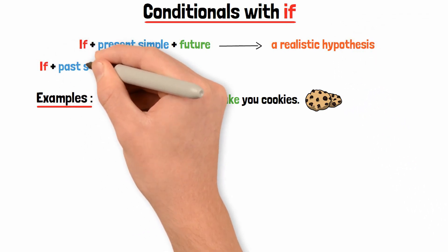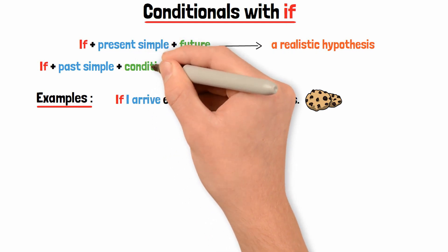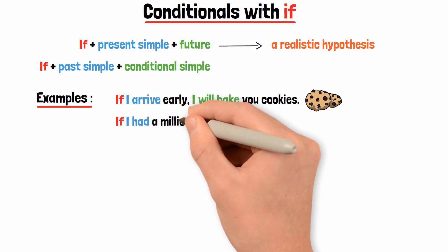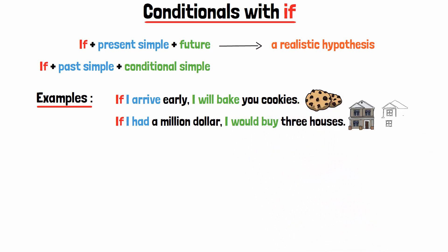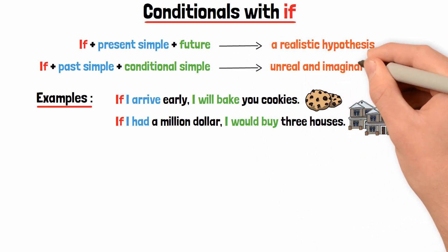If plus past simple plus conditional simple. If I had a million dollar, I would buy three houses. If here expresses an unreal and imaginary situation.